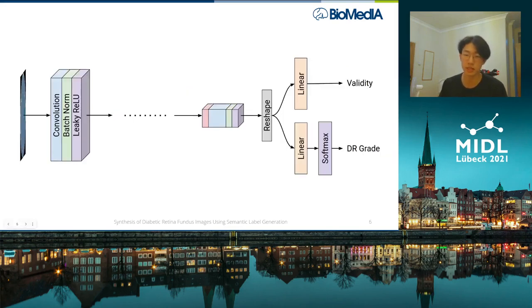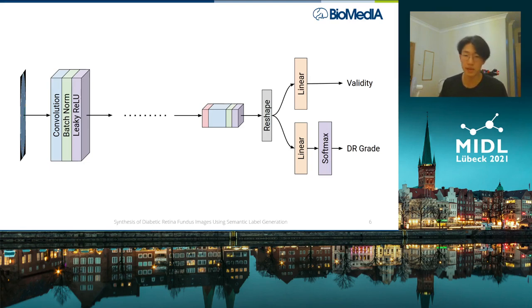In the discriminator, we also use an auxiliary classifier to predict the severity of the input semantic labels, in order to aid conditioning. To counter the discriminator collapse we saw earlier, we're heavily imbalancing training in terms of learning rate, in terms of network capacity, and with the use of adaptive discriminator augmentation, in which augmentations are applied to the discriminator.